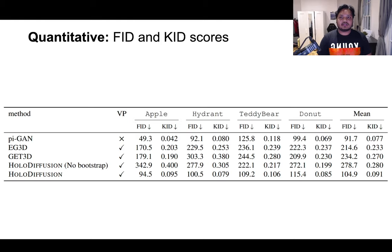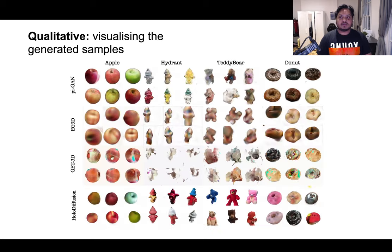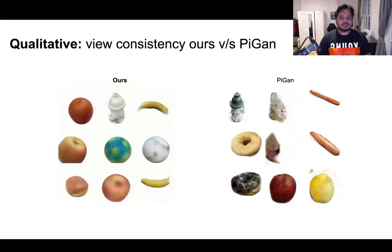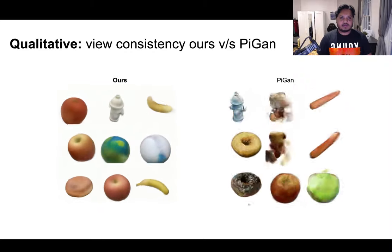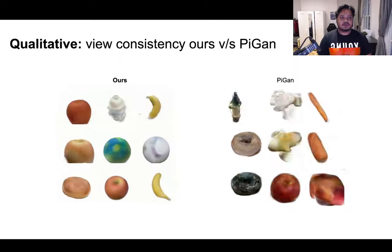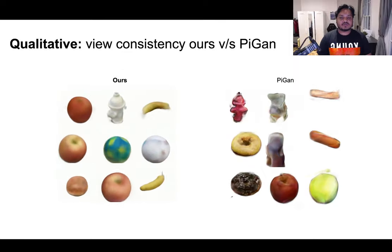These are the FID and KID scores to demonstrate the 2D generative quality of our results. Here are some rendered samples visualized for qualitative comparison. The samples generated using PiGAN are not 3D view consistent, while our samples maintain full 3D view consistency.